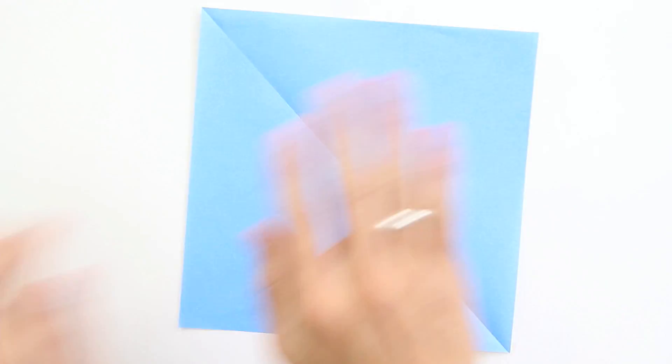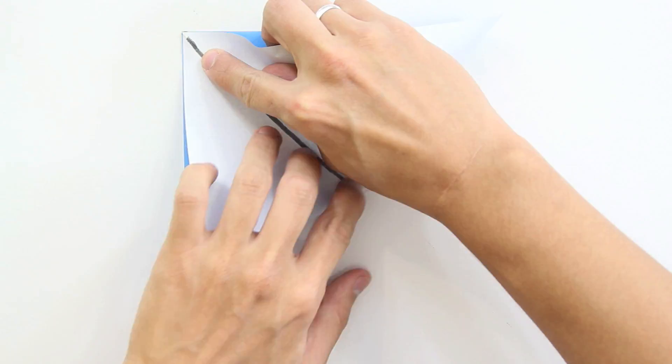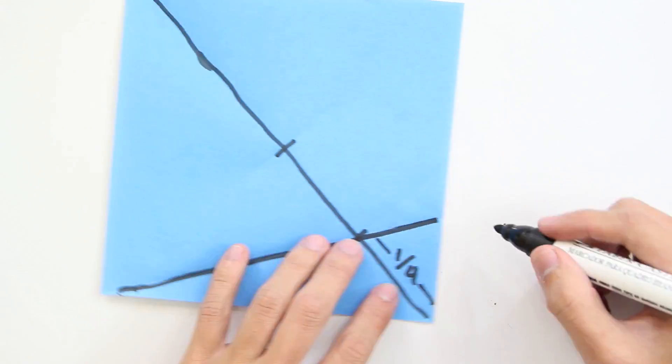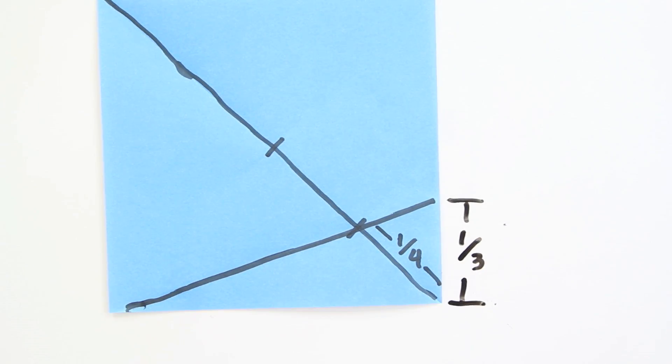You can also reverse this method. So, divide the diagonal in four parts, and make a fold passing through this point. Now, you have one-third of the side of the paper.